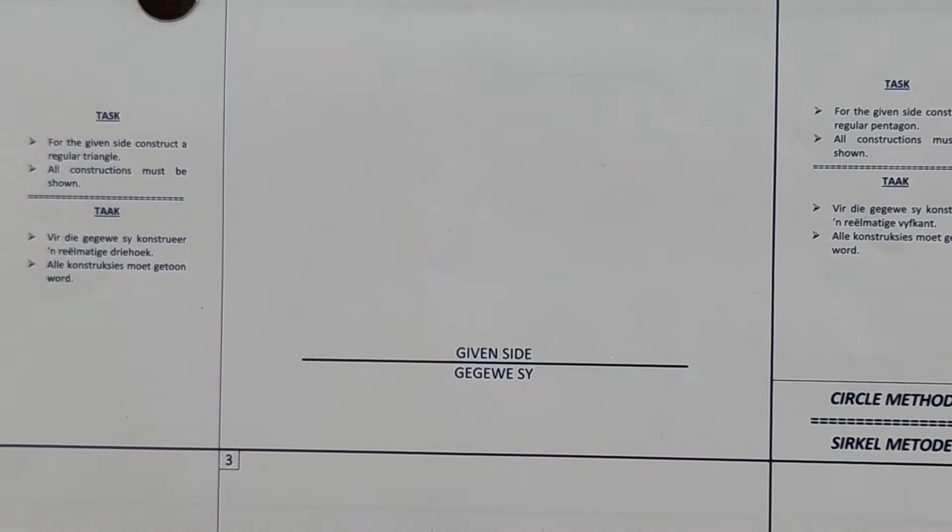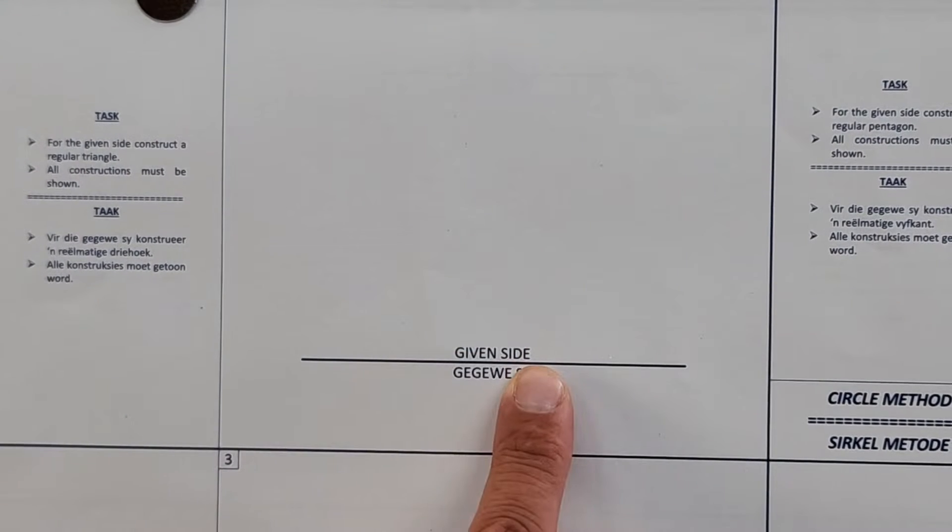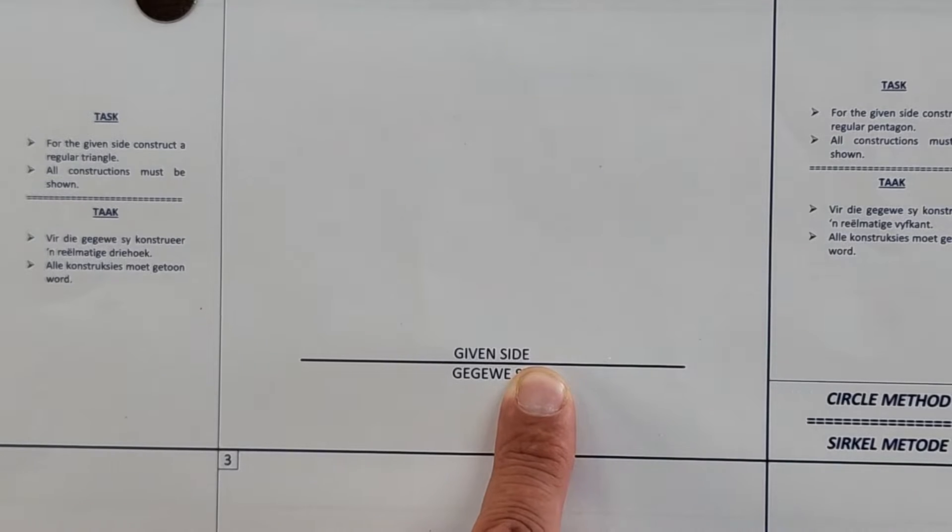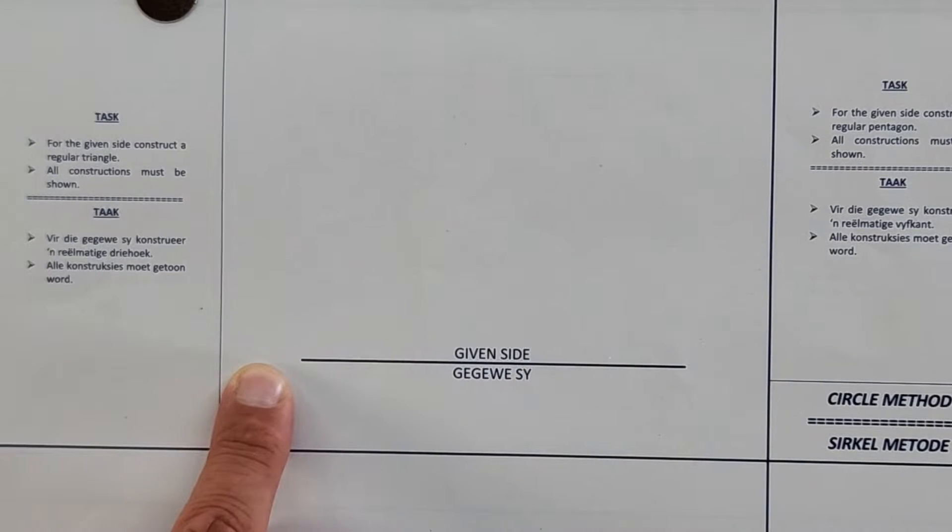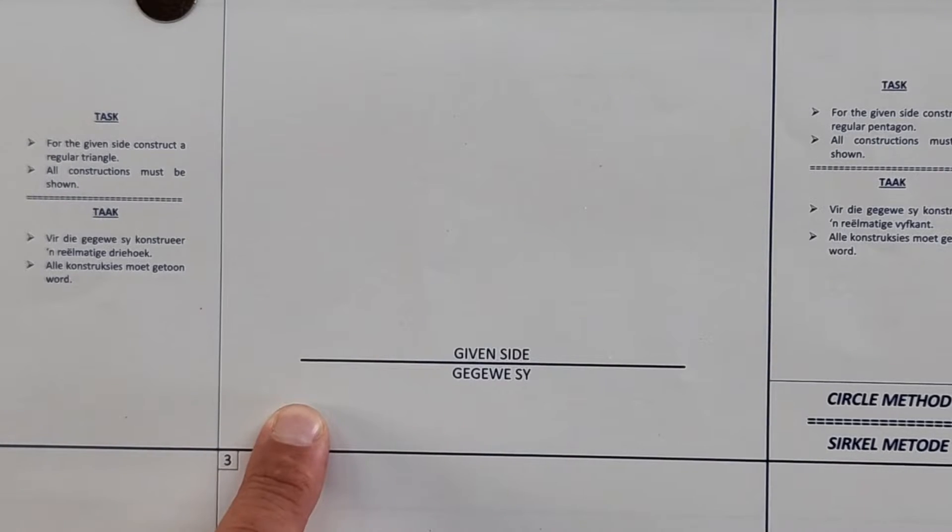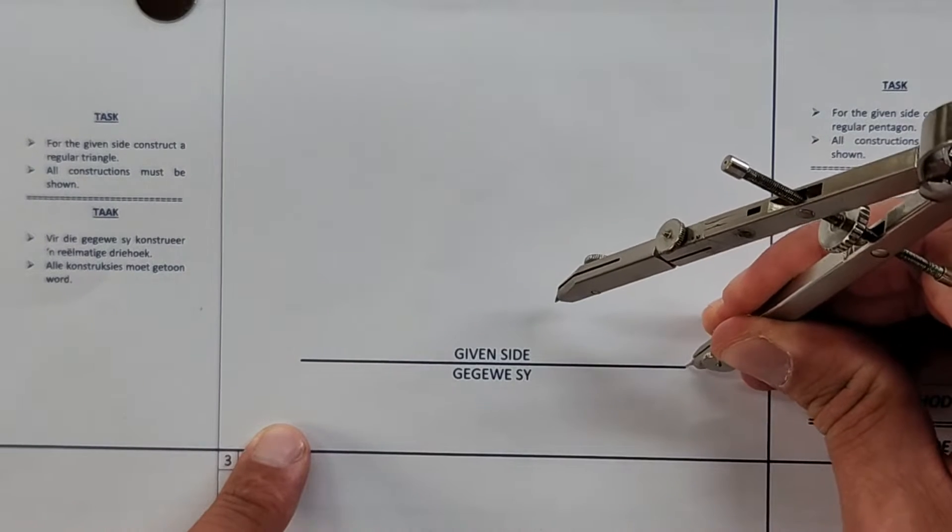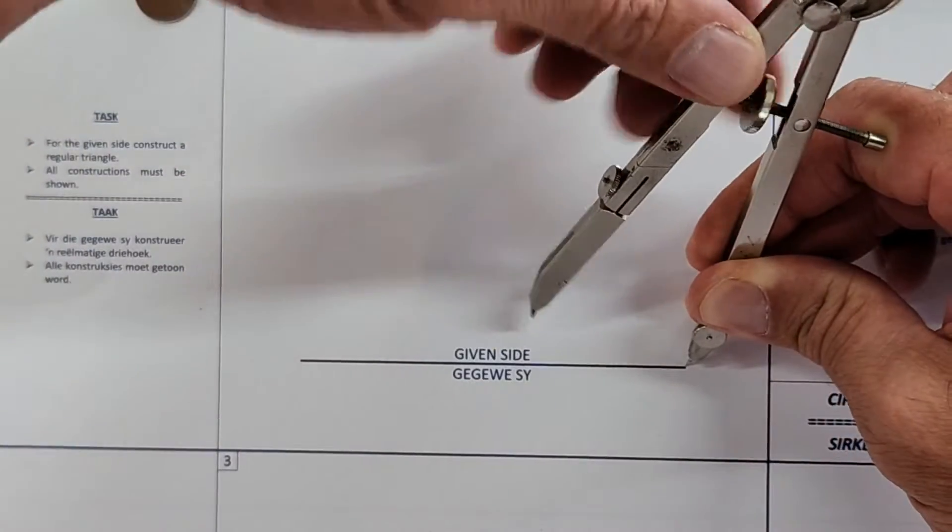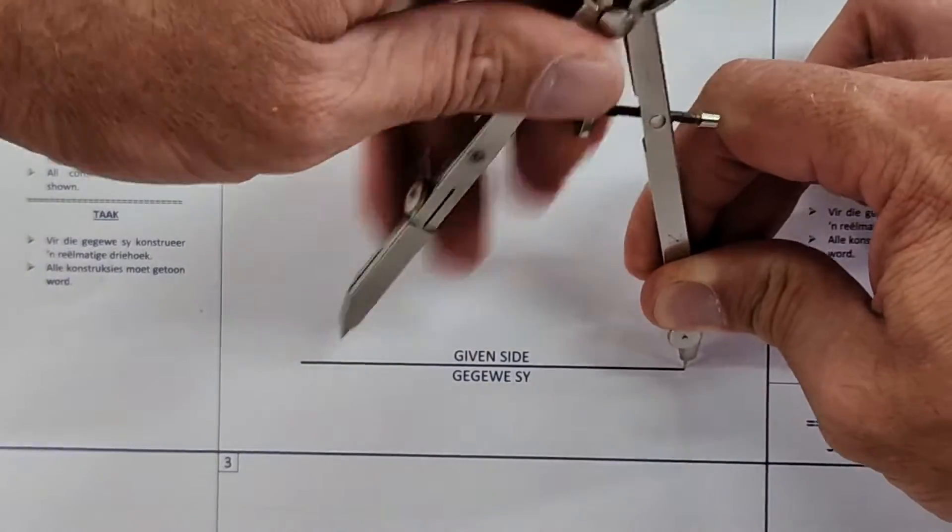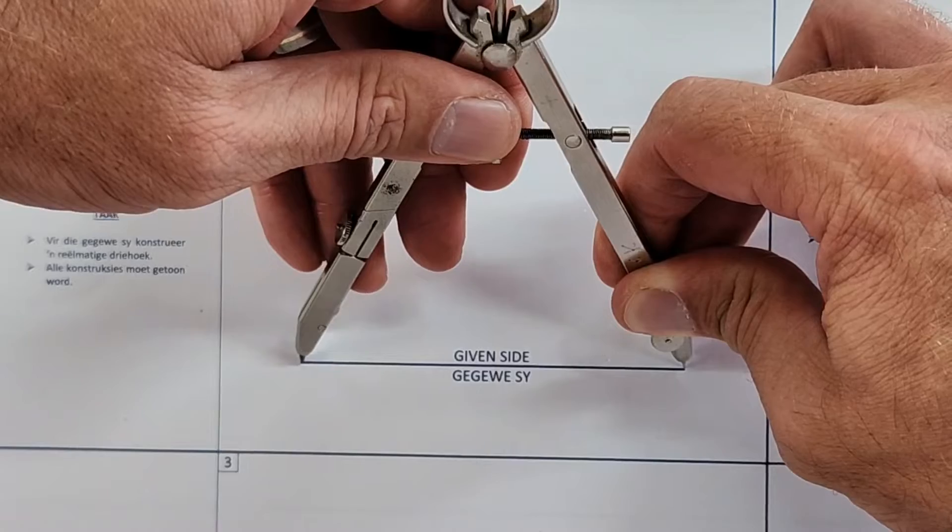There's different construction methods that we're looking at. The first one asks us to construct a right regular triangle on a given line. Okay, so we're going to pass on the full length of the basis.